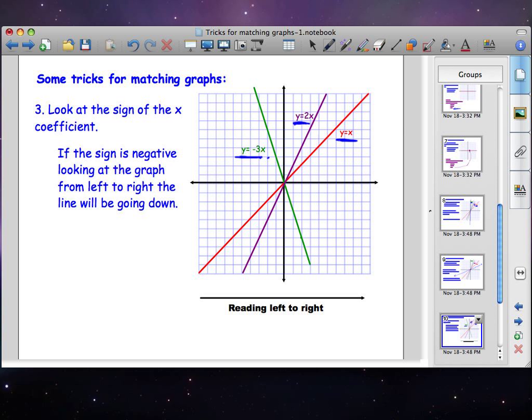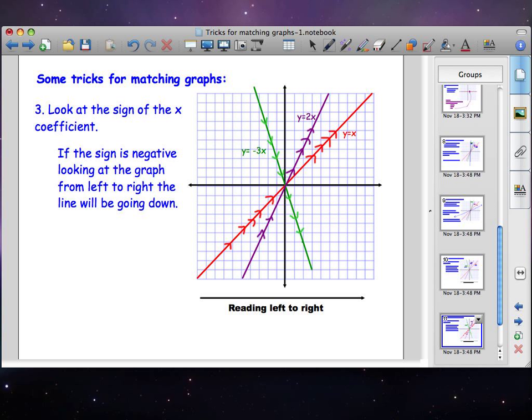As you can see here, the lines that are positive seem to be going in an upwards direction when you're reading from left to right, and the coefficient with a negative in front of it seems to be going down.